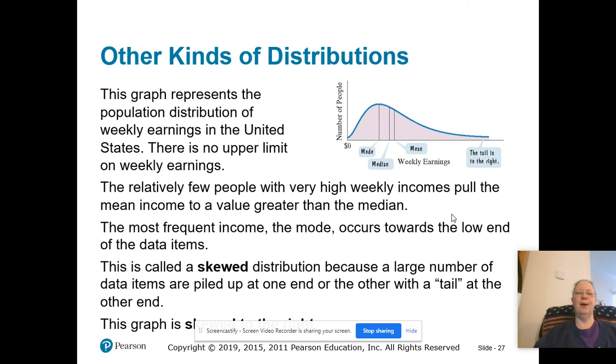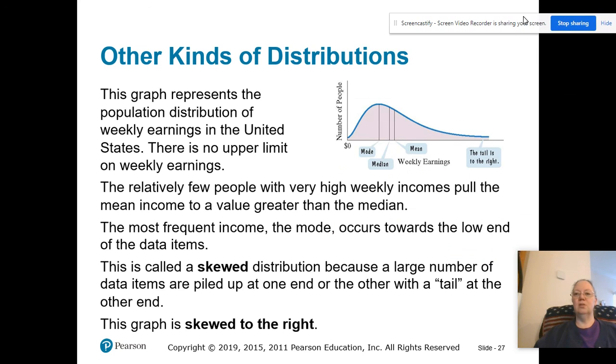We had that example where we were talking about workers, and we had to calculate the mean, but one was the supervisor who made a whole bunch more than the other guys. As you remember, that pulled the mean higher than the median. The most frequent income, the mode, occurs towards the low end of the data items. This is called a skewed distribution because a large number of data items are piled at one end or the other with a tail at the end.